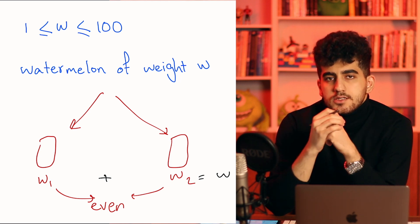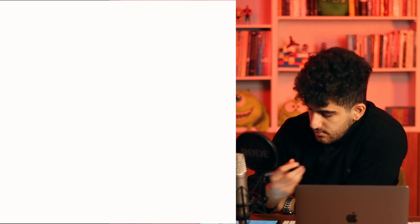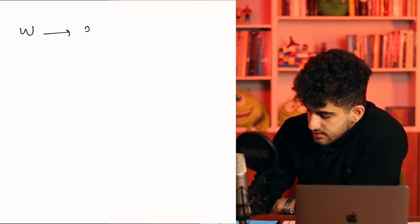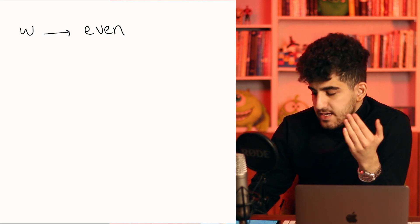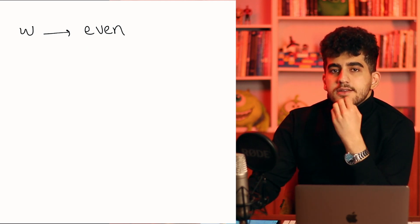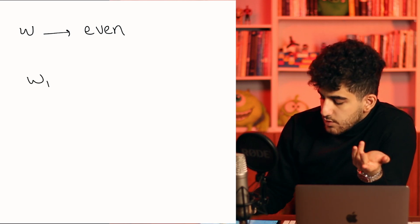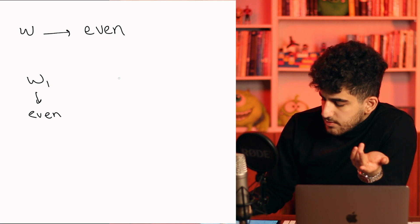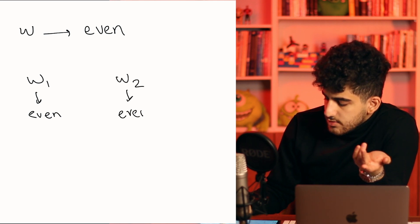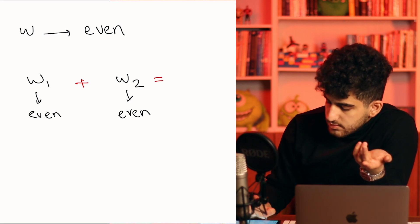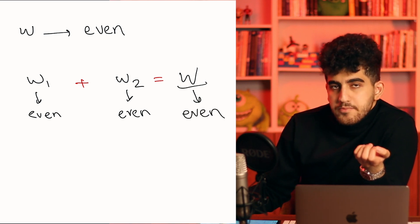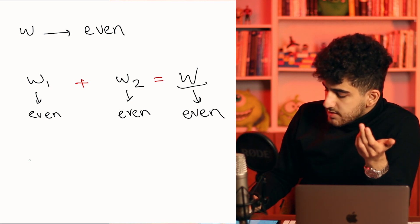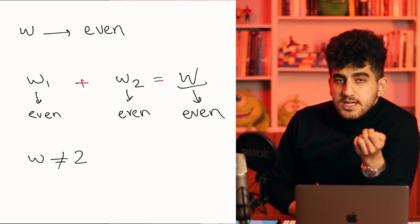To solve this problem: first, W must be even. Why? Because W1 must be even and W2 must be even, and W equals W1 plus W2. The sum of two even numbers is always even, so W must also be even.